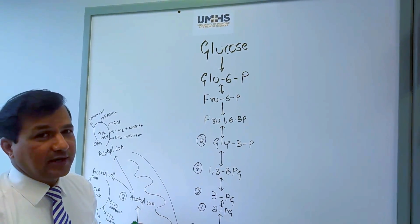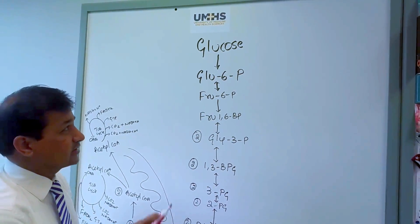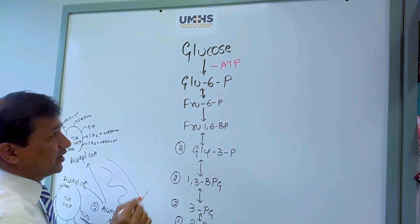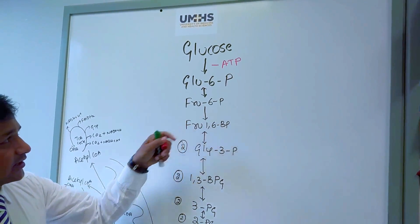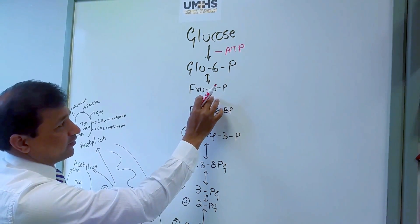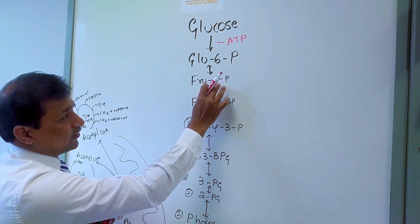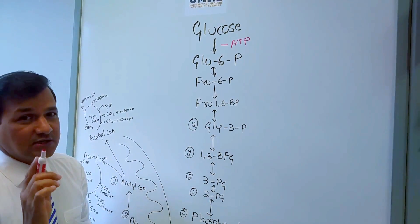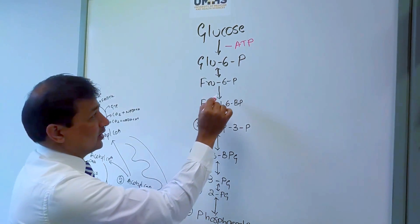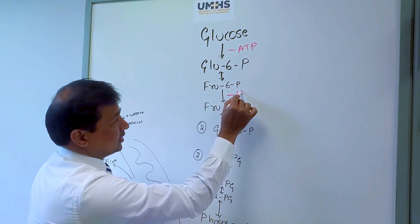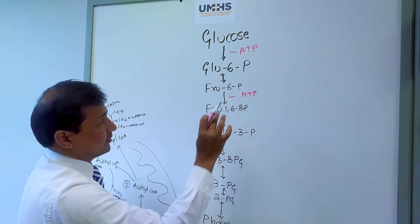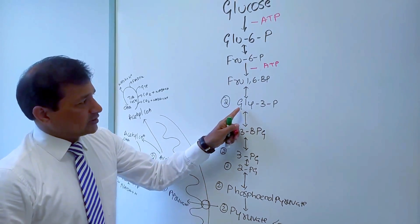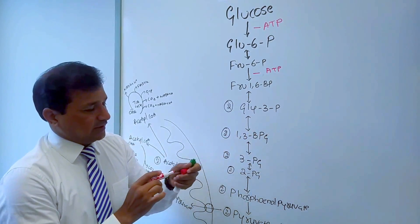In the very first reaction — conversion of glucose into glucose 6-phosphate by hexokinase or glucokinase — there is consumption of one ATP, written in red. Then in the third reaction, done by phosphofructokinase-1, where fructose 6-phosphate is converted to fructose 1,6-bisphosphate, there is consumption of one more ATP — so that's minus 1 ATP.